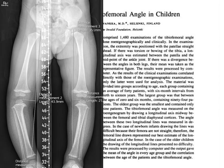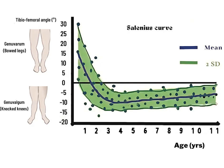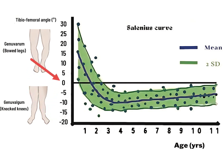Dr. Salenius, a Finnish doctor, was one of the earliest to study this condition. He studied nearly 1,000 children and measured the angle between the thigh bone (femur) and the shin bone (tibia), plotting this angle according to the age of the child. This produced what is commonly known as the Salenius curve. On the curve, the horizontal axis represents the child's age from birth to adolescence, while the vertical axis represents the magnitude of the angle between the tibia and femur.